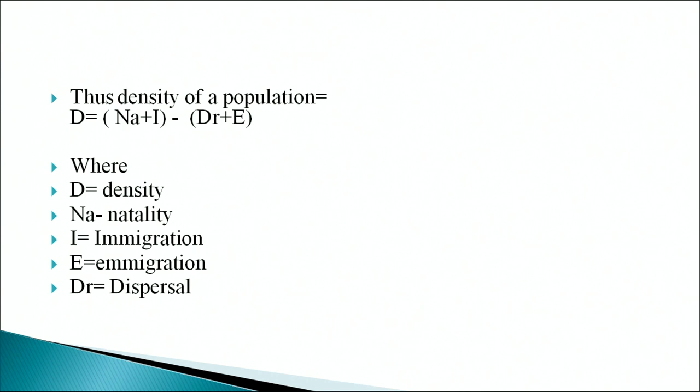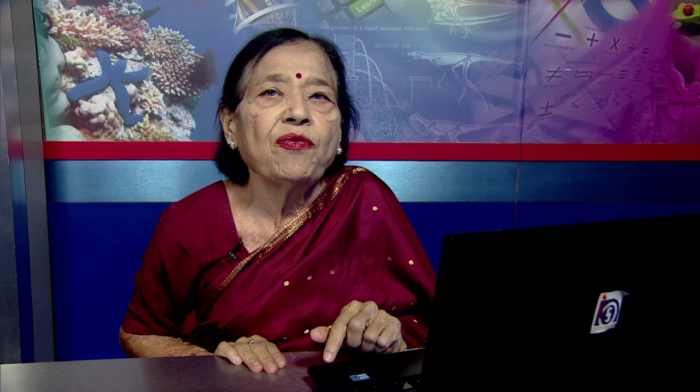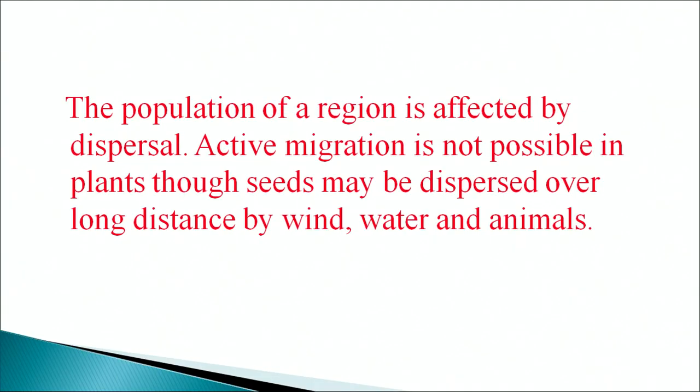The density of any population basically depends on four factors: natality, mortality, immigration and emigration. Thus, density of a population D = (NA + I) − (DR + E), where D is density, NA is natality, I is immigration, E is emigration, and DR is dispersal. Seeds of plants may be dispersed over long distances by wind, water and animals, so the population of a region is affected by dispersal.